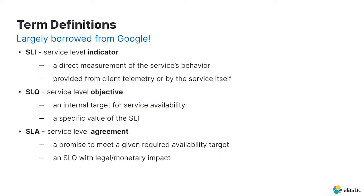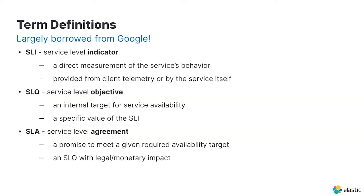Service level objectives are usually determined by product managers and leadership as a target we want to maintain. An agreed upon service level objective allows us to have a data-driven basis for good conversations about prioritization of new features versus reliability fixes across the platform. It also gives us an unambiguous signal of where we stand on availability. A service level agreement is essentially a service level objective with a monetary impact — a contractual agreement with our customers that has penalties if we don't meet it, usually things like refunds or credits for the future, depending on what level we hit.